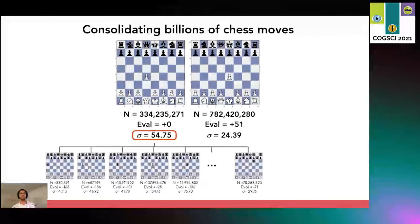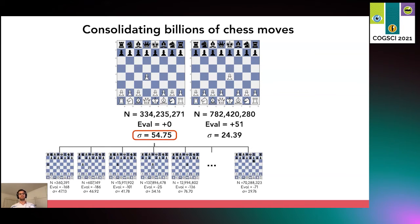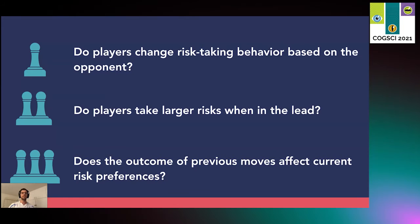Finally, we can calculate the weighted variance of each move, which is our measure of riskiness. This is calculated by taking each of the possible responses the opponent could make and weighing the resulting score by its probability. So intuitively, a move where there are only two outcomes — half the time the opponent will take my queen and the other half they'll lose the game — would be a very risky move. So now that we have a measure of riskiness for all the moves in all our games, we can start to ask questions about how risk preferences change as a function of the opponent, the state of the game, and past performance.